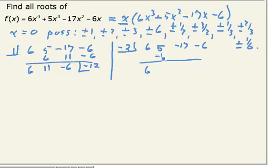Negative 2 times 6 is negative 12. If I add, I get negative 7. Multiply, I get 14. Add, I get negative 3. Multiply, and I get 6. If I add, I get 0. So this tells me that x equals minus 2 is one of the roots.